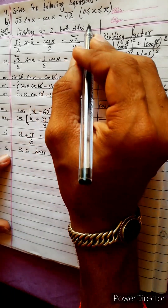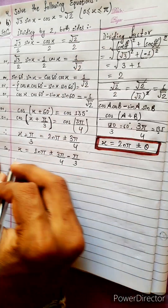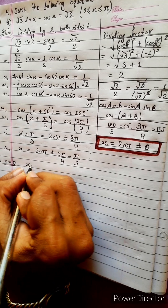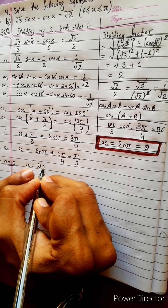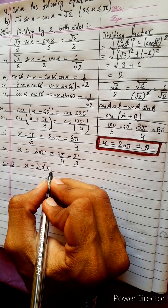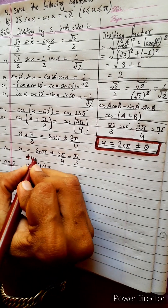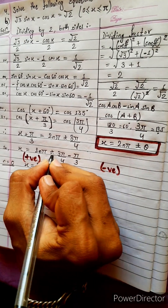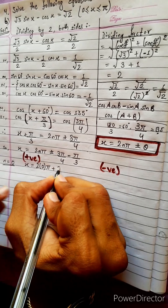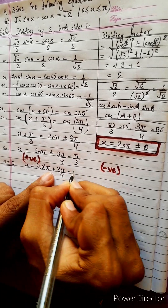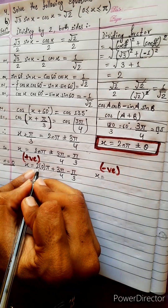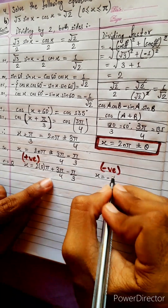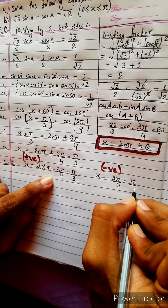Now let's do one thing. It is given a range 0 to π. Let's check. For n equals 0, in place of here it will be 0 — 2 into 0 pi. Check positive side and negative side, because here is plus minus. Positive: 3π by 4 minus π by 3. And x equals to — 2 into 0 into π means 0, no need to write. Directly negative: 3π by 4 minus π by 3.